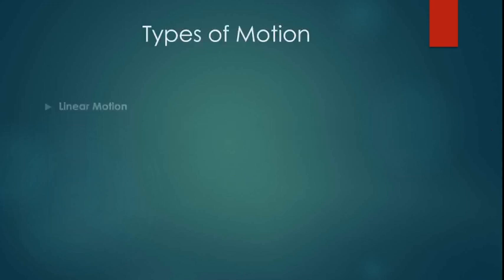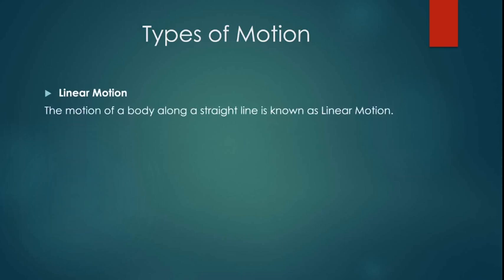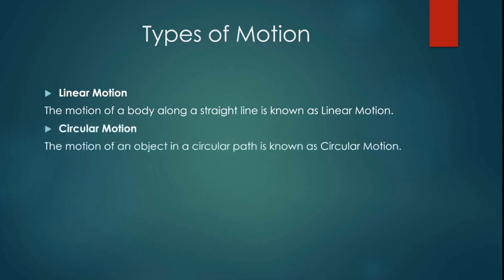So first I'm gonna explain the types of motion. There's linear motion: the motion of a body along a straight line is also known as linear motion. There's circular motion: the motion of an object in a circular path is known as circular motion.